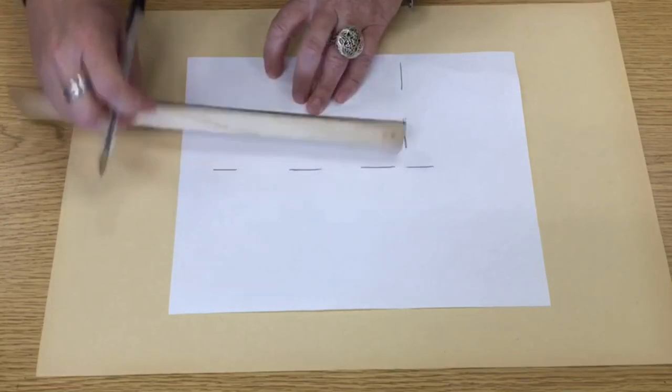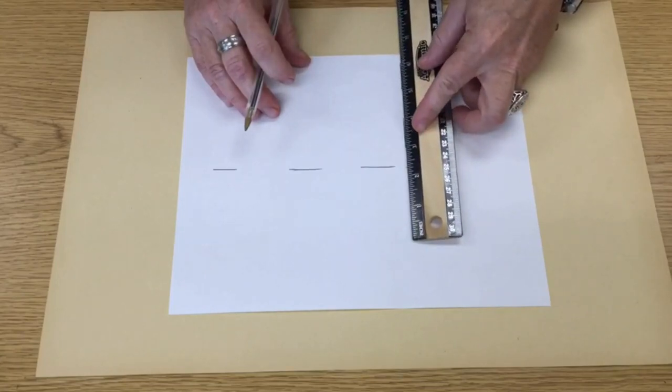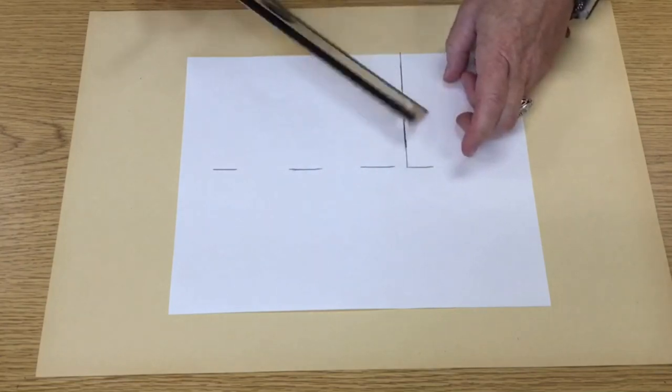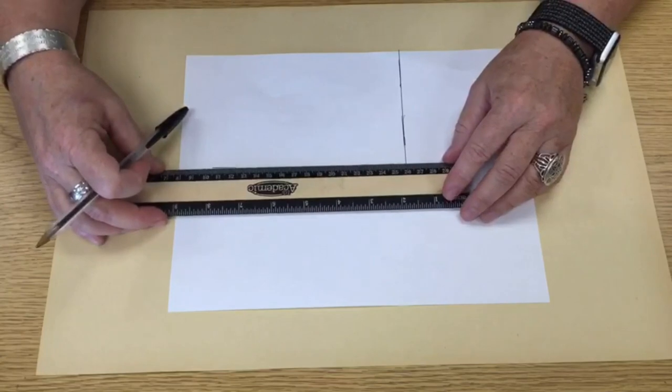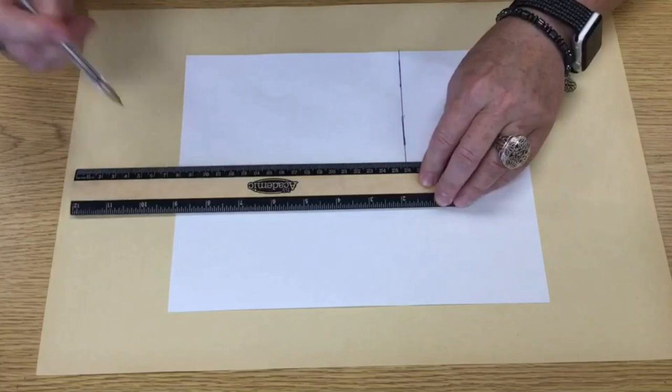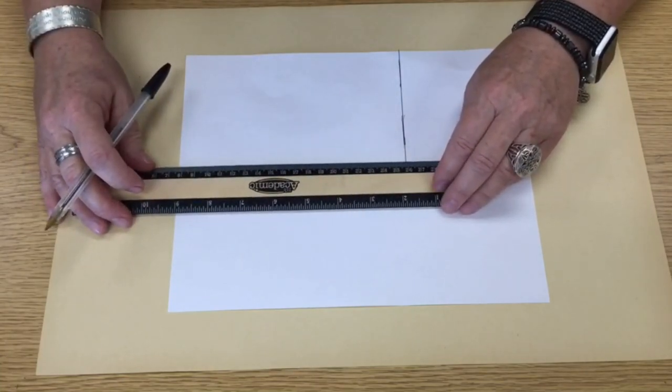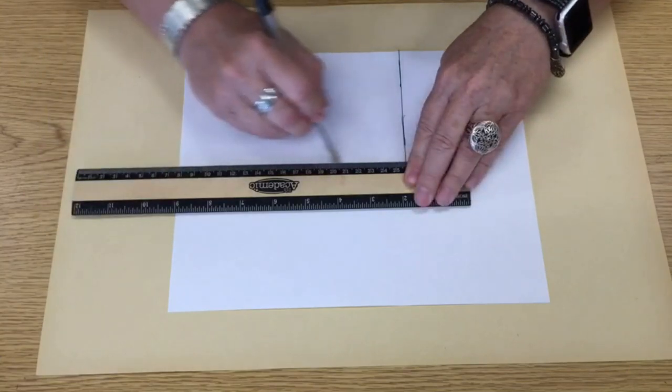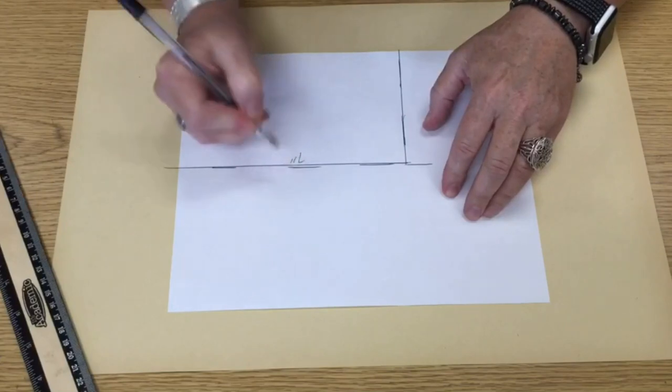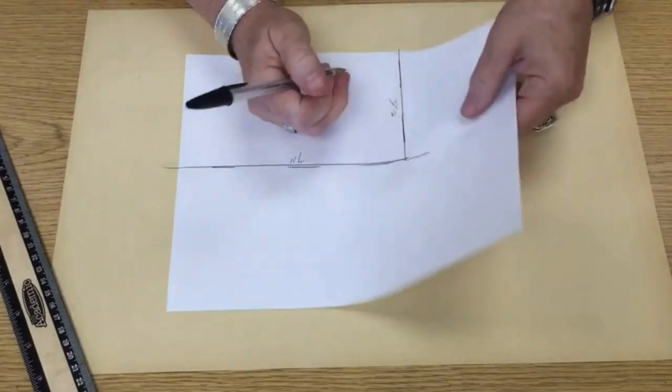Then we're going to connect all of our lines here to make the rectangle. Match it up, draw across it, match it up this direction and draw across it. And I missed that line a little bit, but I can fix that. You're going to go back just a little bit more and draw the line. So this is seven inches here, four inches here.